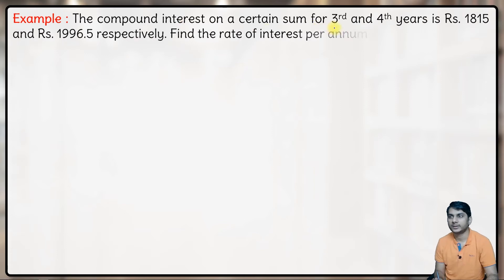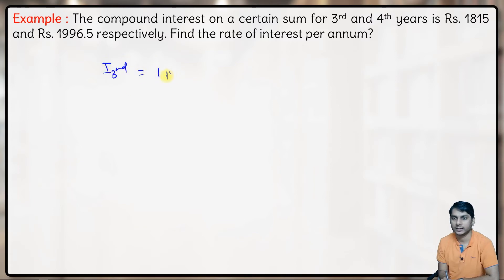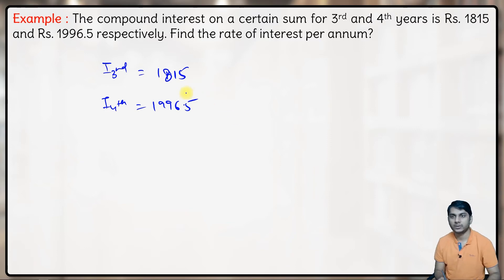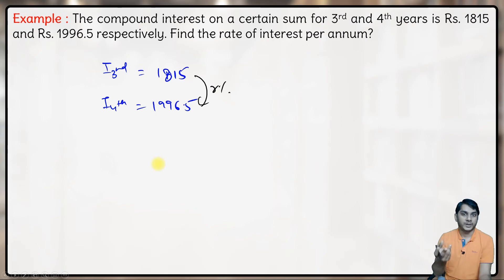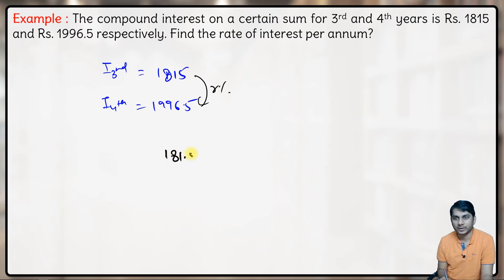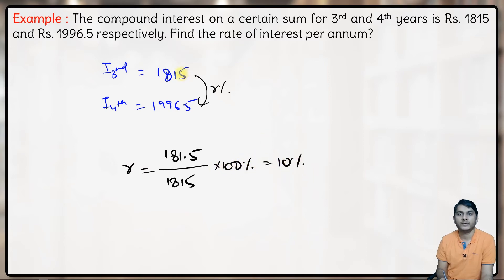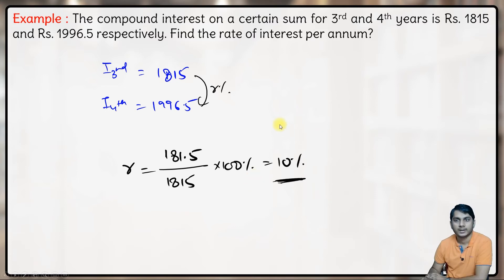Next example: The compound interest for the 3rd year is 1815 and for the 4th year is 1996.5. Find the rate of interest per annum. We know that the 4th year's interest = the 3rd year's interest increased by r%. The change is 1996.5 − 1815 = 181.5. This 181.5 is on a base of 1815, so the rate of interest = (181.5 / 1815) × 100 = 10%. The rate of interest is 10% per annum.